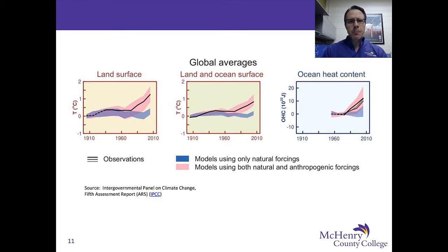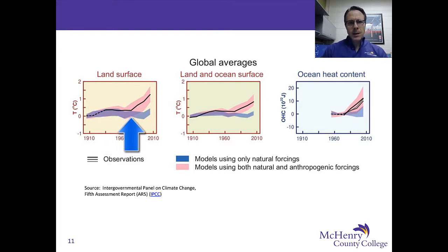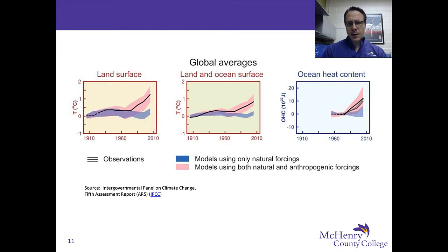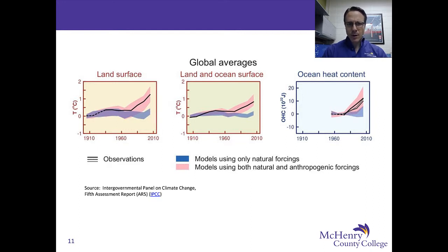We see that models using only natural forcings are responsible for approximately zero degrees of temperature difference. There is some fluctuation and likely some error, which is why the line is kind of thick instead of narrow like the black one. So computer models that model temperature of the Earth, looking at natural forcings only, would expect approximately zero degrees temperature difference.